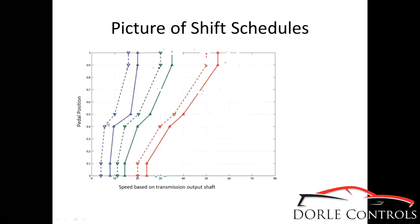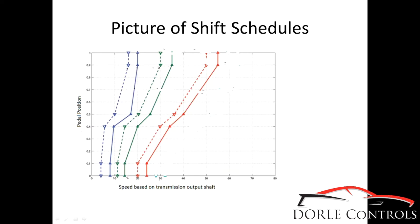Here's an example of the shift schedules in a vehicle. Here's your vehicle speed — really your output shaft transmission speed — and here's your pedal position. This blue line represents the 1-2 shift, which determines when you're going to shift from first gear to second gear. As soon as your speed crosses that line, you're going to do a 1-2 upshift. At lower pedal positions you upshift sooner, but if your pedal is almost wide open throttle, you're going to do that 1-2 upshift at a higher speed. So it keeps you in lower gears at higher speeds and higher torques.